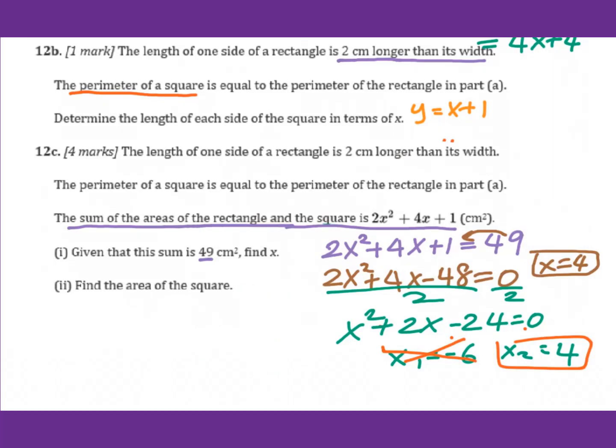Then find the area of the square. We know for each side of the square, that is x plus 1. So x plus 1, that equals 5. Therefore, the area of square will be 5 squared, that equals 25.